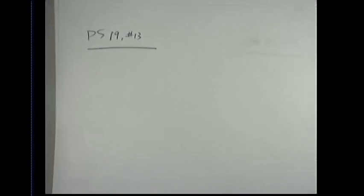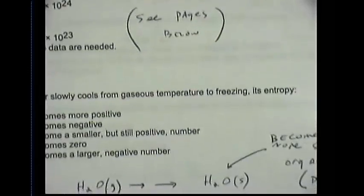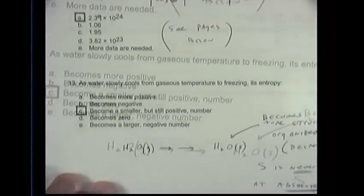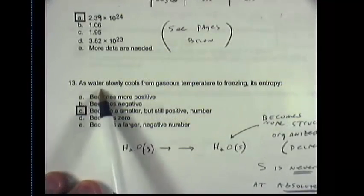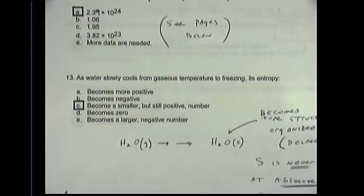Another question that I want to examine from our problem set is question number 13. Once again, I think we can reason our way through this. This question is one that I do not want to rewrite here for you to see, but instead I'll just throw it up on our doc cam and see if I can zoom in so we can get a closer look and see what it says. So as we can see in this question, it says, as water slowly cools from gaseous temperature to freezing, its entropy, what does its entropy do?